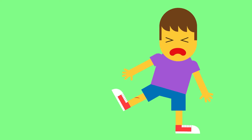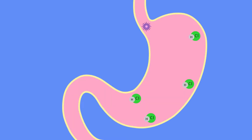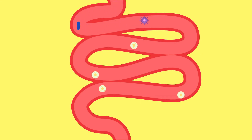Preventing wounds from becoming infected, the blood contains platelets and fibrin which cause the blood to clot and form a scab. The hydrochloric acid in our stomach is really strong and kills most of the harmful microorganisms. Friendly bacteria in the intestine also stop other harmful bacteria from taking over.